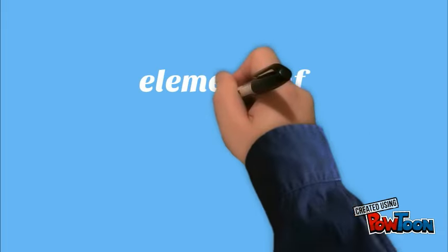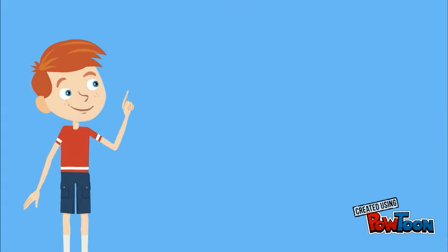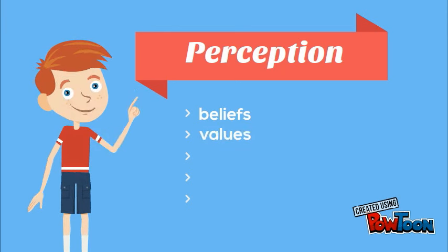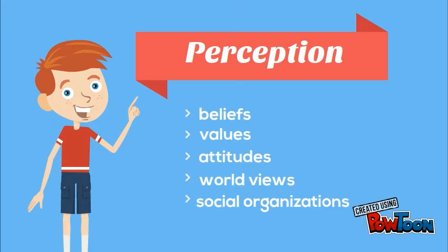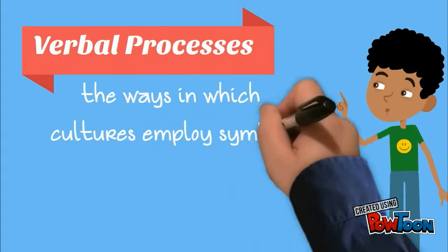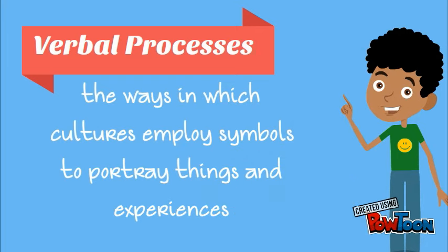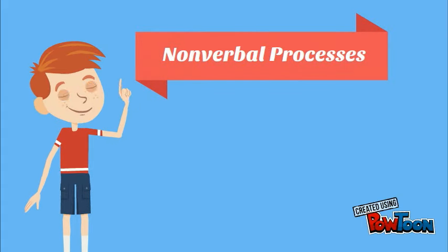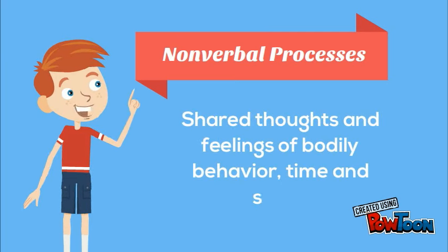There are four elements of intercultural communication. Number one is perception, which includes beliefs, values, attitudes, worldviews, and social organizations. Number two is verbal processes — the ways in which cultures employ symbols to portray things and experiences. Number three is non-verbal processes, which involves shared thoughts and feelings through bodily behavior, time, and space.